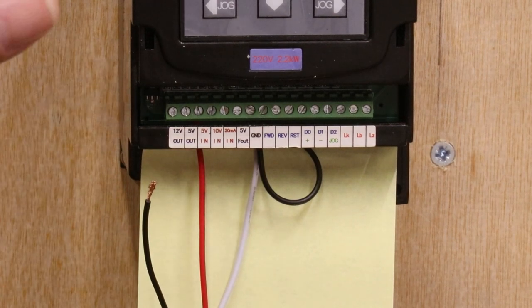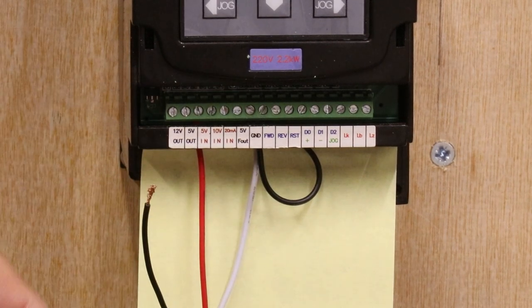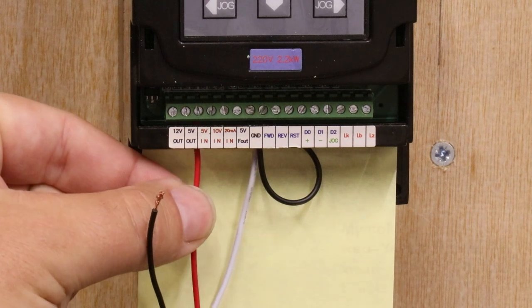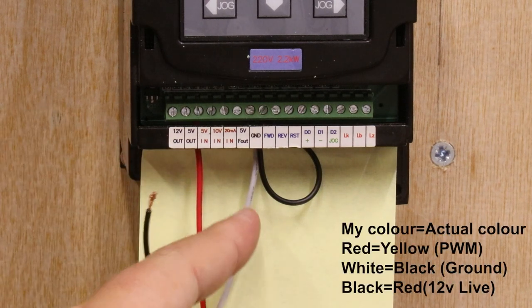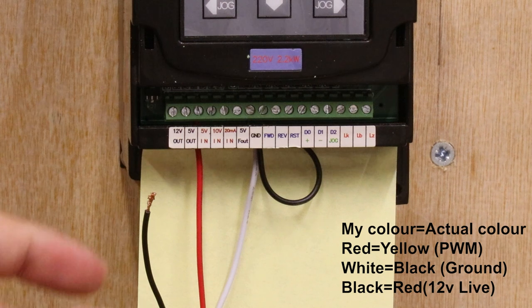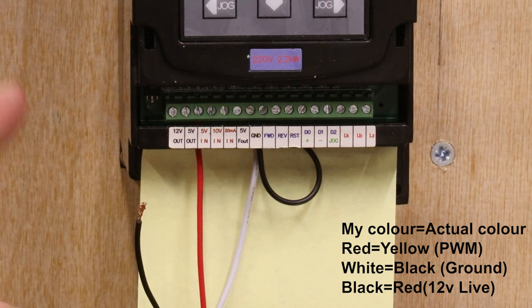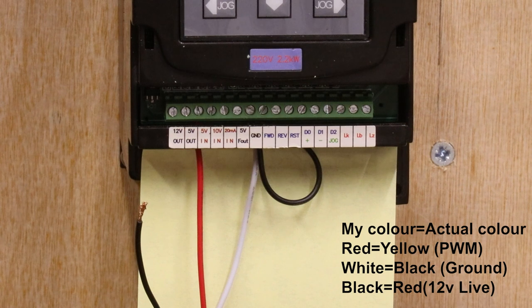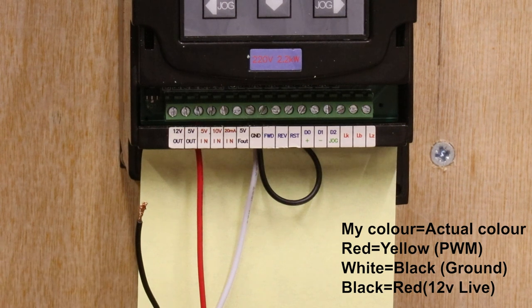So to make it very clear, in my setup here the red is technically the yellow cable you'll be using, the white is the ground cable, and the black is the 12 volt live. I'll leave some little key symbol in the corner of the screen just to make it easier going forward.